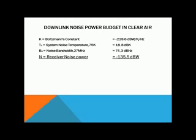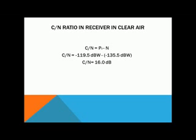Downlink noise power budget in clear air: Boltzmann's constant minus 228.6 dBW per Kelvin per Hz; system noise temperature 75 K (18.8 dBK); noise bandwidth 27 MHz (74.3 dBHz); receiver noise power minus 135.5 dBW. Carrier-to-noise power ratio in the receiver in clear air: C/N = PR minus N = minus 119.5 dBW minus (minus 135.5 dBW) = 16 dB.